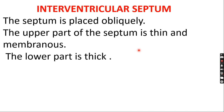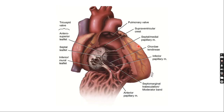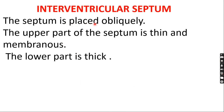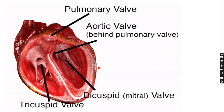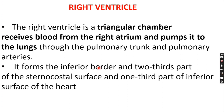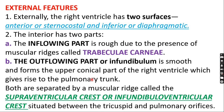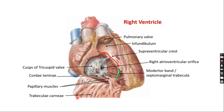The last topic is the interventricular septum, which divides the two ventricles. To summarize: the right ventricle is a triangular chamber receiving blood from the right atrium and pumping it into the lungs. It forms part of the inferior border, sternocostal surface, and inferior surface. External features include anterior and inferior surfaces. The inflowing part is rough due to trabeculae carneae; the outflowing part is smooth.